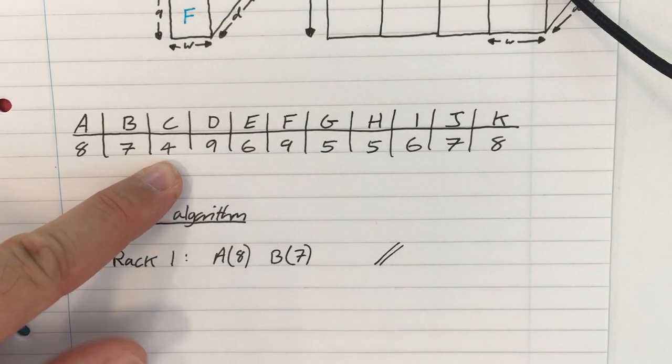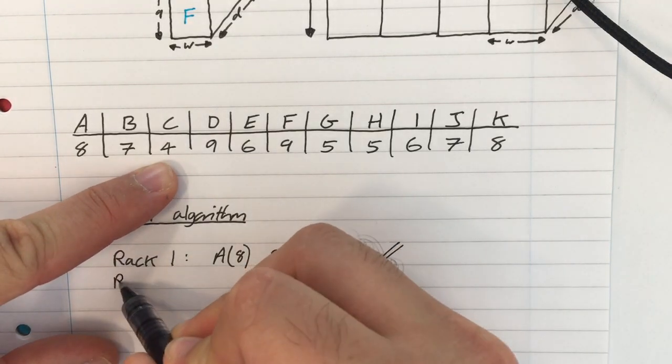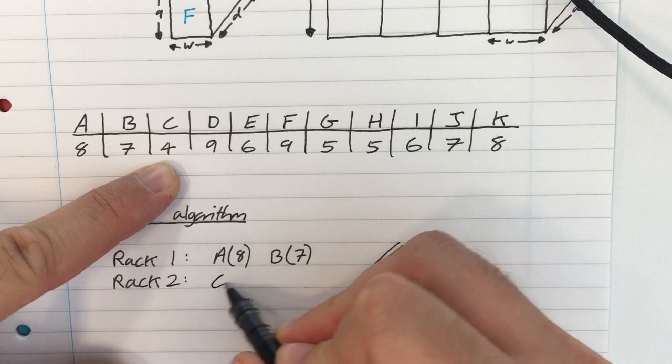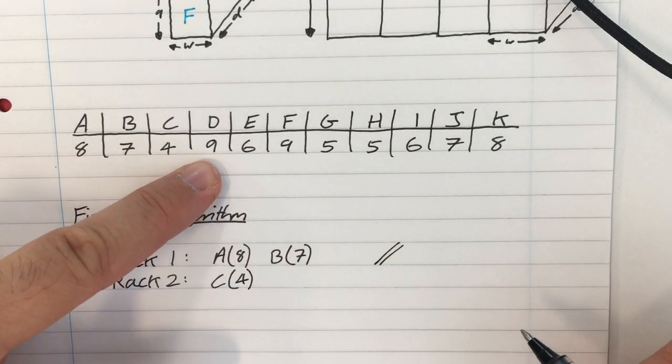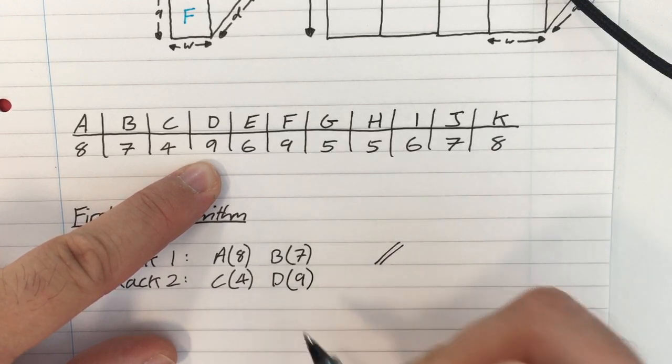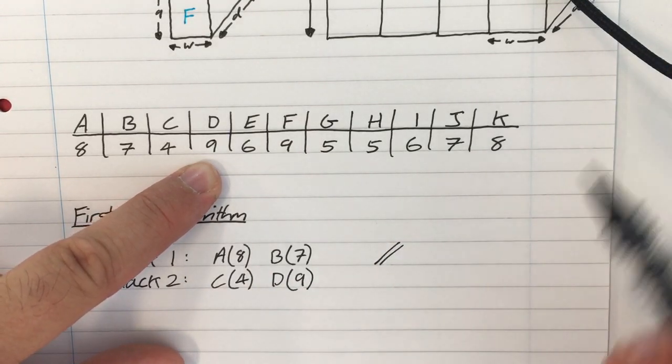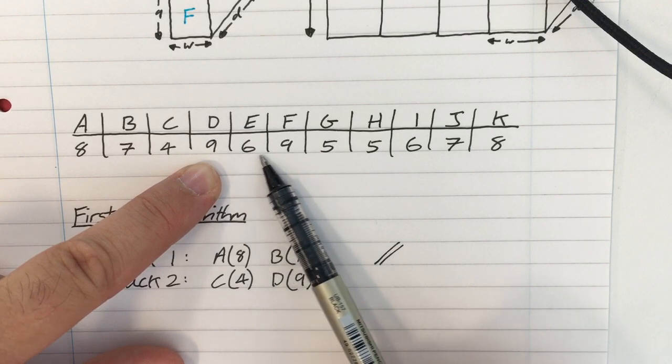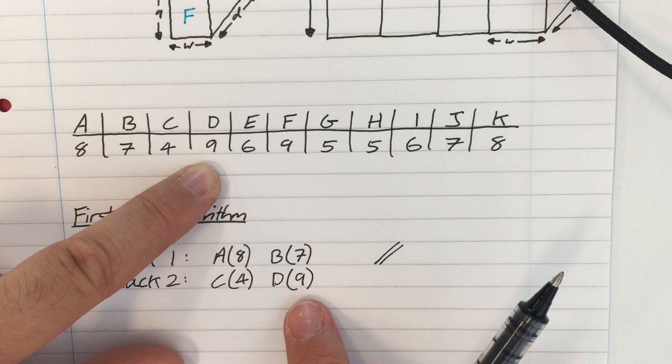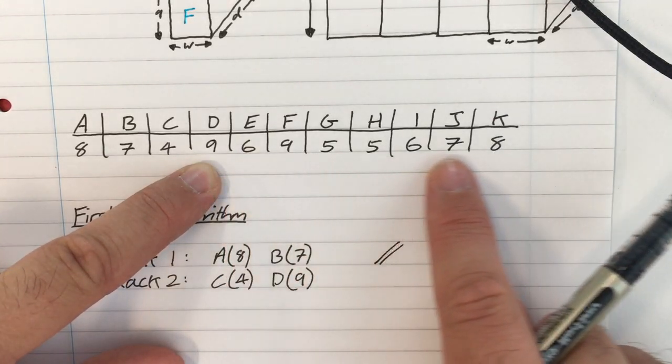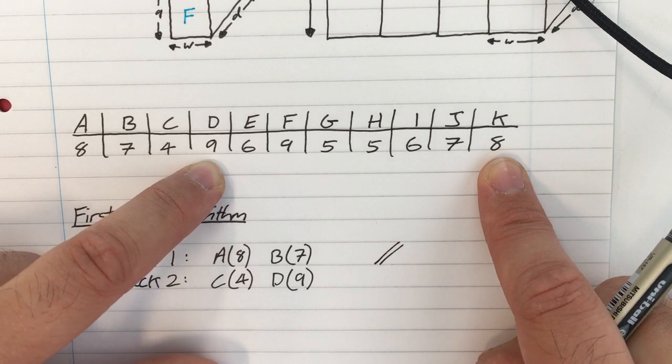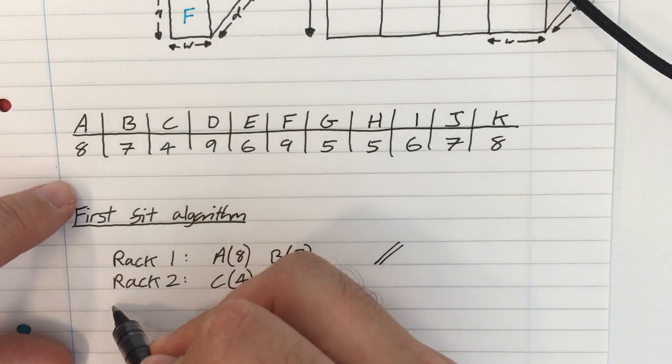So nothing else can go in that rack. So I've picked up box C. I can't put it in rack 1, so I've got to open up a new rack. Let's call it rack 2. And that is 4 high. Pick up box D, and that's 9 high. So that's now 13 in that rack, so there's a space of 2. Which means I can tell straight away that none of these other boxes are going to fit in rack 2.